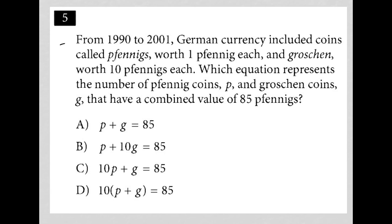So this question says, from 1990 to 2001, German currency included coins called pfennigs, worth one pfennig each, and groschen, worth 10 pfennigs each.